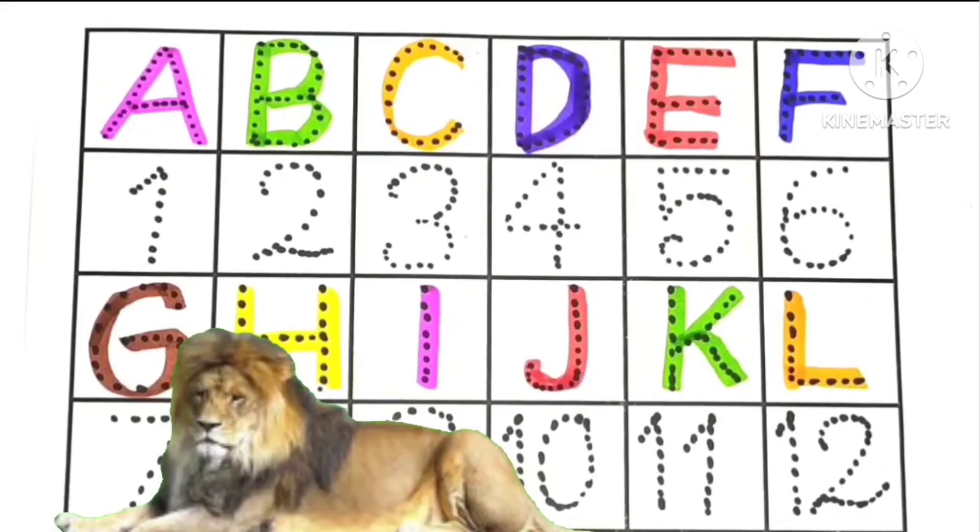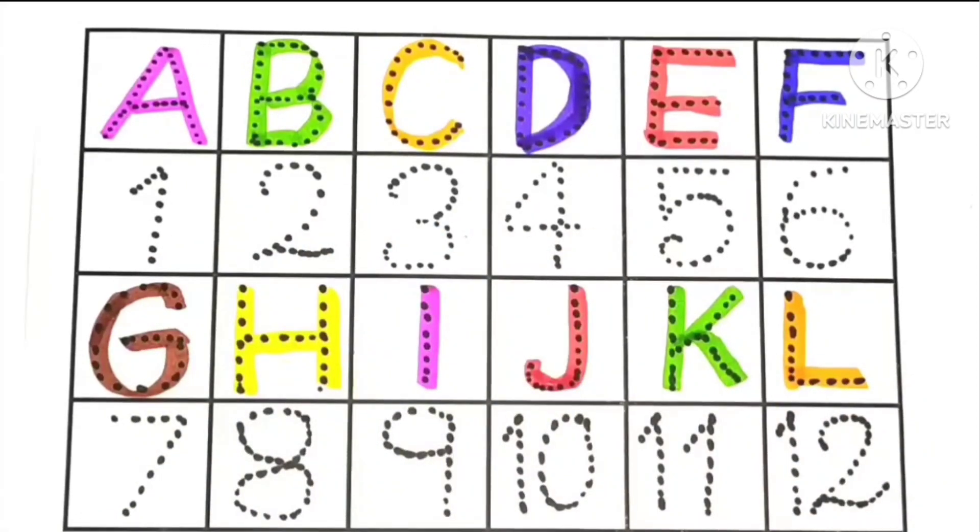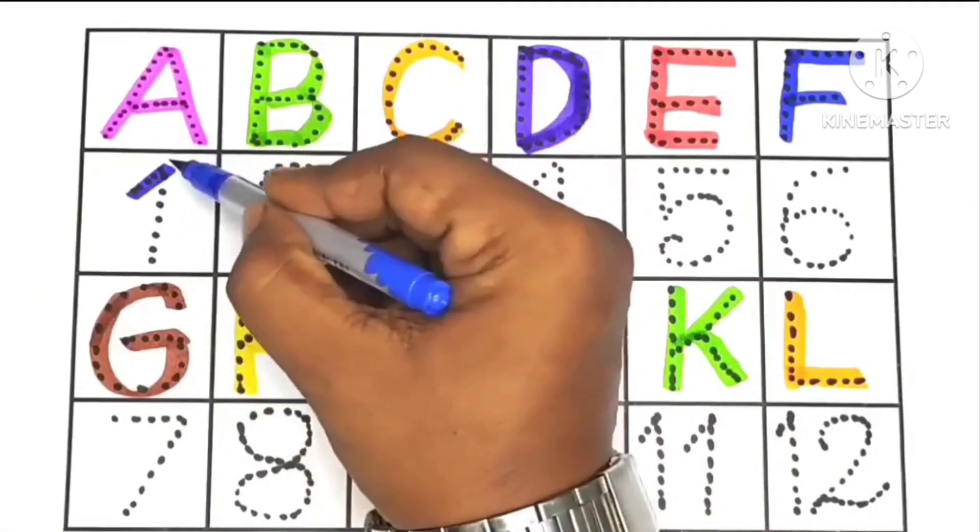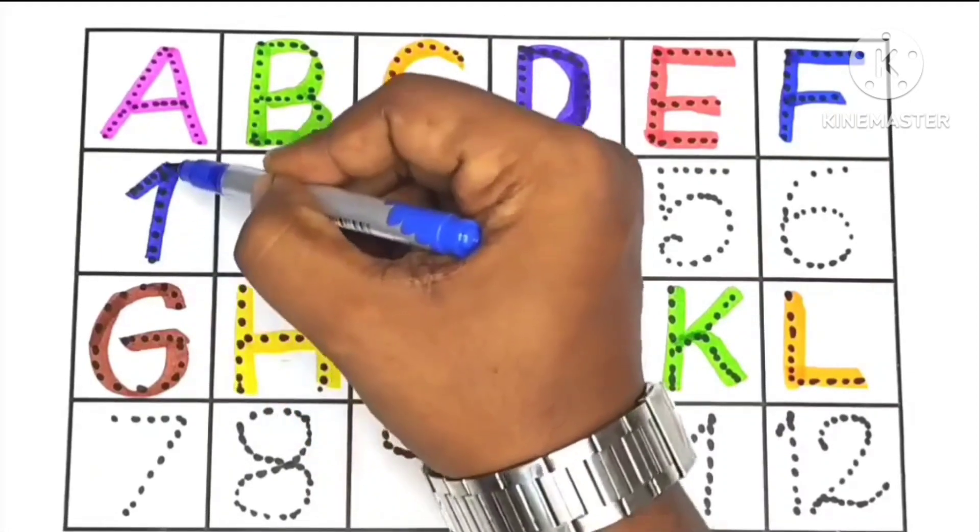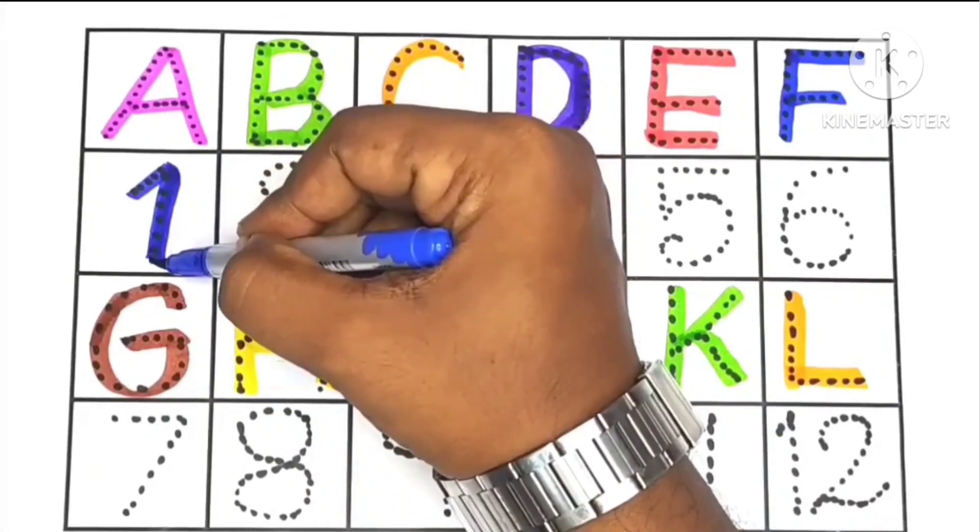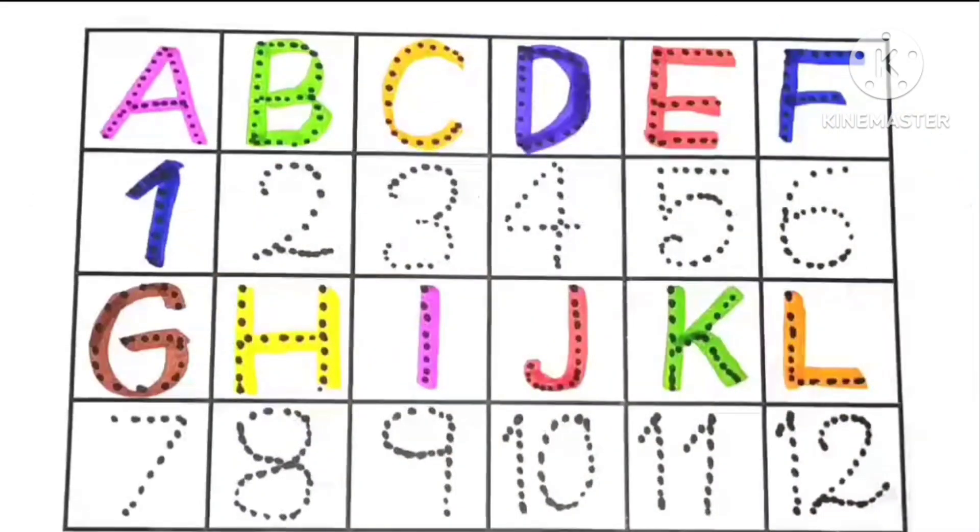Abhi abhi, L abhi hame... base... abhi hum sikhenge 1, 2, 3, 4. Yeh kaun sa number hai bachyo? This is number one. O-N-E, this is number 1. After 1...